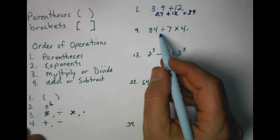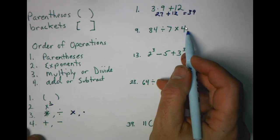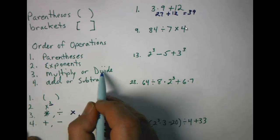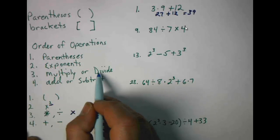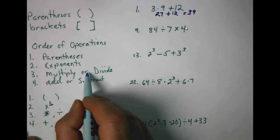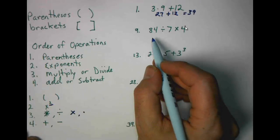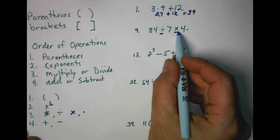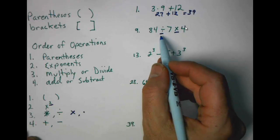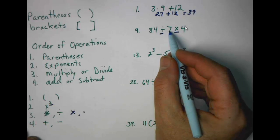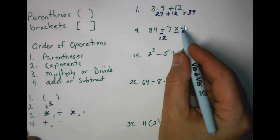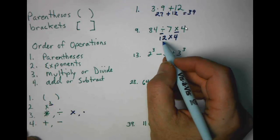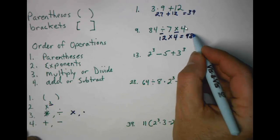Number nine: we have eighty-four divided by seven times four. There's no parentheses, no exponents. Multiplication and division are worth the same — it's kind of like in chess where knights and bishops are both worth three points. So we decide what to do first by reading left to right. Division comes first, so eighty-four divided by seven gives us twelve, then twelve times four gives us a total of forty-eight.